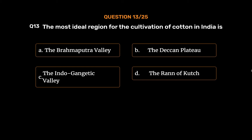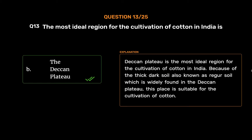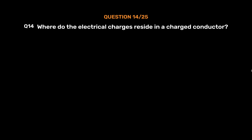The correct answer is Option B: The Deccan Plateau. The Deccan Plateau is the most ideal region for the cultivation of cotton in India, because of the thick dark soil — also known as regur soil — which is widely found in the Deccan Plateau, making this place suitable for the cultivation of cotton.